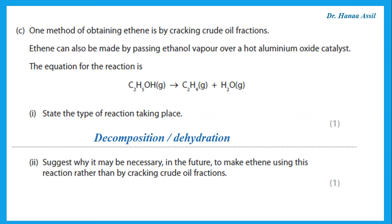Why may it be necessary in the future to make ethene using this reaction rather than by cracking? We know ethene can be obtained by cracking crude oil, but in the future it may be better to get it from ethanol because crude oil is a non-renewable resource and it would probably run out. We will not have enough crude oil in the future.